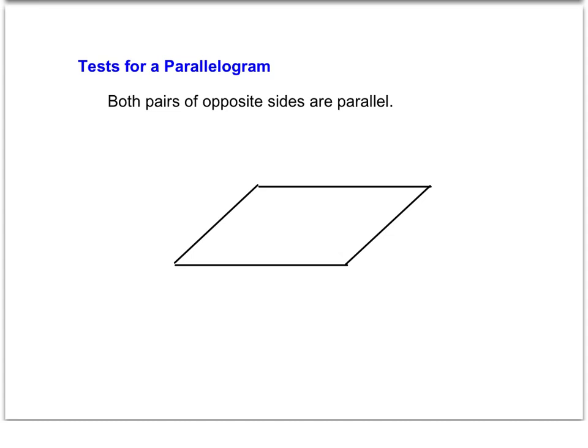What I want you to do is draw a parallelogram and add the given information to that shape. The first test says: if both pairs of opposite sides are parallel, then it is a parallelogram. So if a figure shows both pairs of opposite sides are parallel, we can say yes, it is a parallelogram. Draw a parallelogram and add the symbols to show opposite sides are parallel — one set with one arrow and the other set with two arrows to differentiate them.